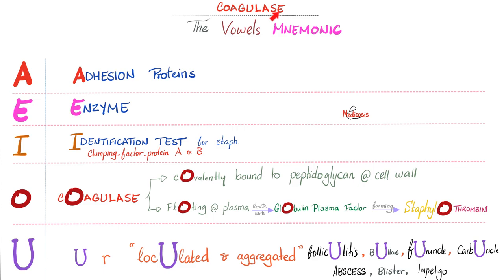Let's talk about enzymes. Coagulase coagulates the blood — it forms a clot. For coagulase, just remember the vowels. A: it's one of the adhesion proteins. E: it's an enzyme. I: you can use it as a biochemical identification test to find coagulase, which lets you diagnose Staph aureus as opposed to Staph epidermidis, because those two are coagulase negative. O: coagulase is covalently bound to the peptidoglycan cell wall and floats in plasma, reacts with globulin plasma factor, forming staphylothrombin, which will cause thrombosis. If you are coagulase positive, you will be loculated and aggregated in a narrow area.